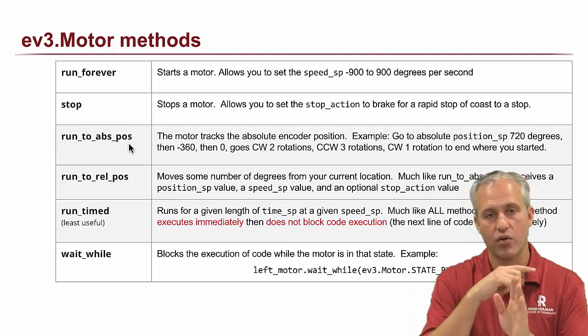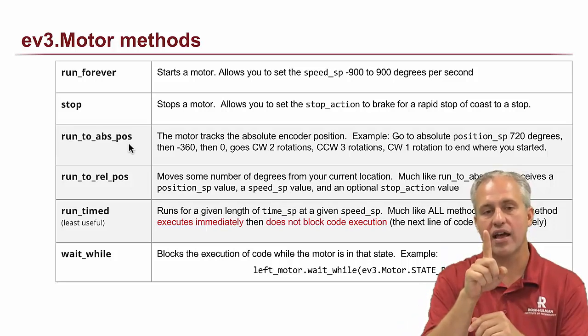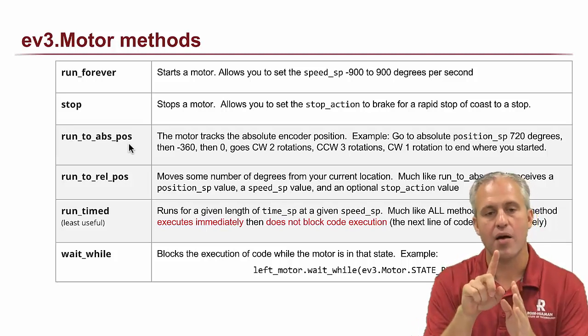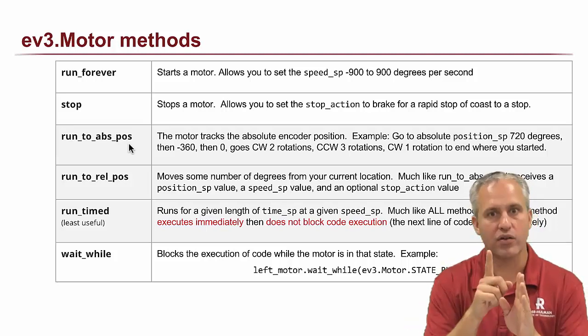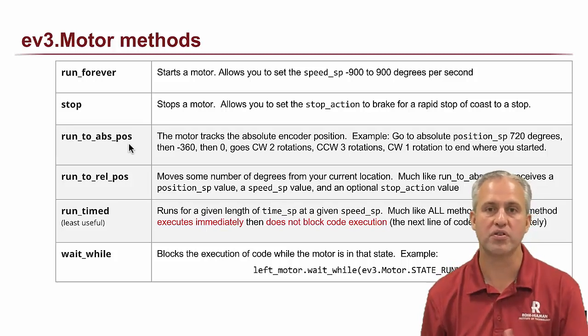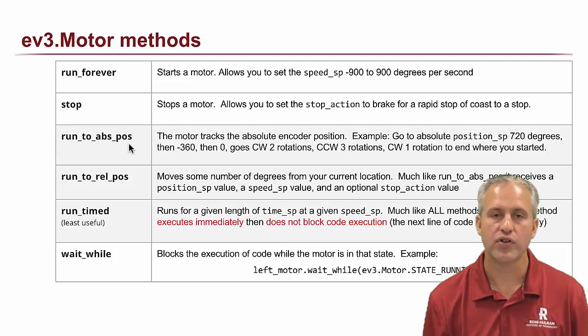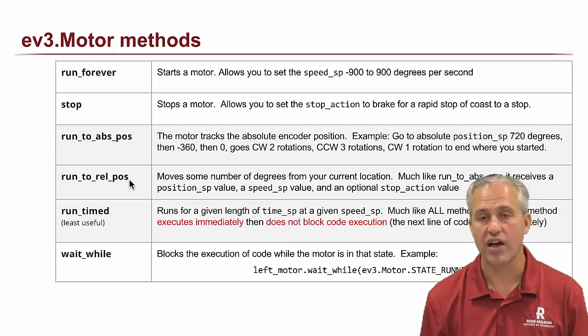It turns out the robot always tracks where it's at. So if you say like, I don't know, spin 720 degrees, so it spins 720. And then you say, hey, go back to negative 360. Well, it'll do three laps to get back there. And then you say, hey, go to zero. It'll go right back to where it started. So it's an absolute position. It's neat, but it turns out not to be that useful.